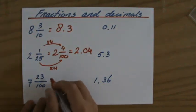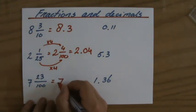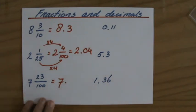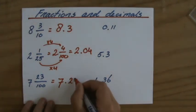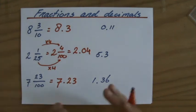7 and 23 over 100. Do not have to convert anything because it's already there in hundredths. So 7.23. The other way around.